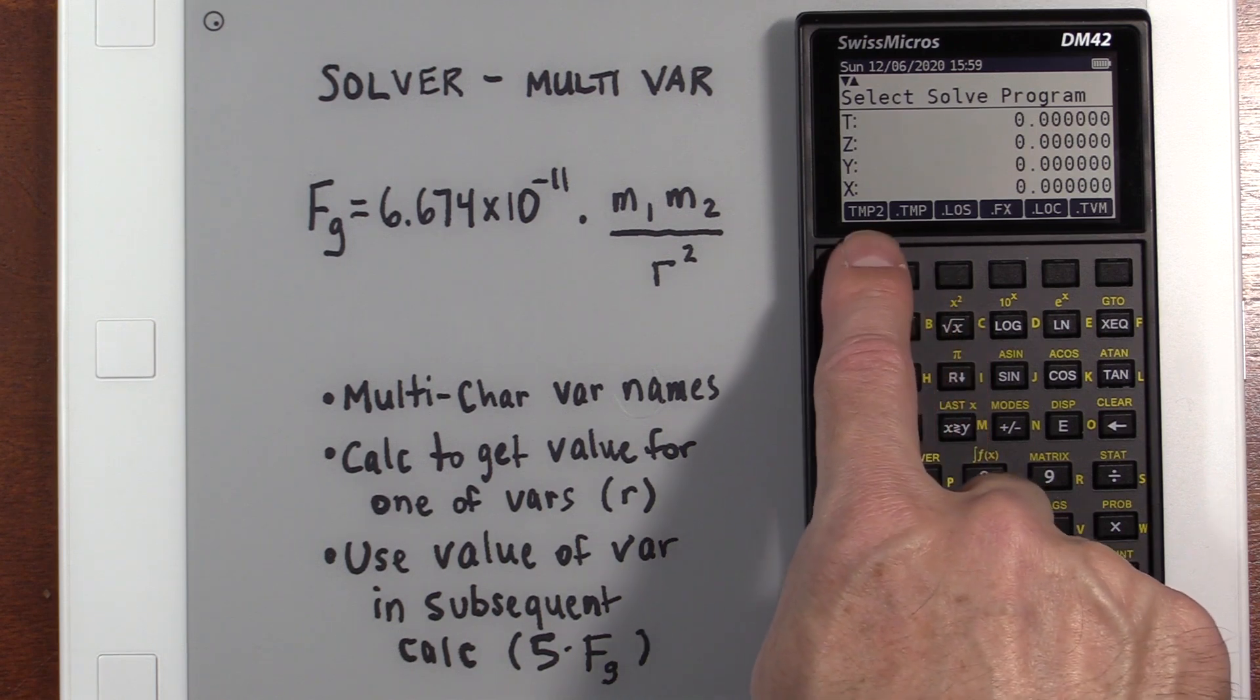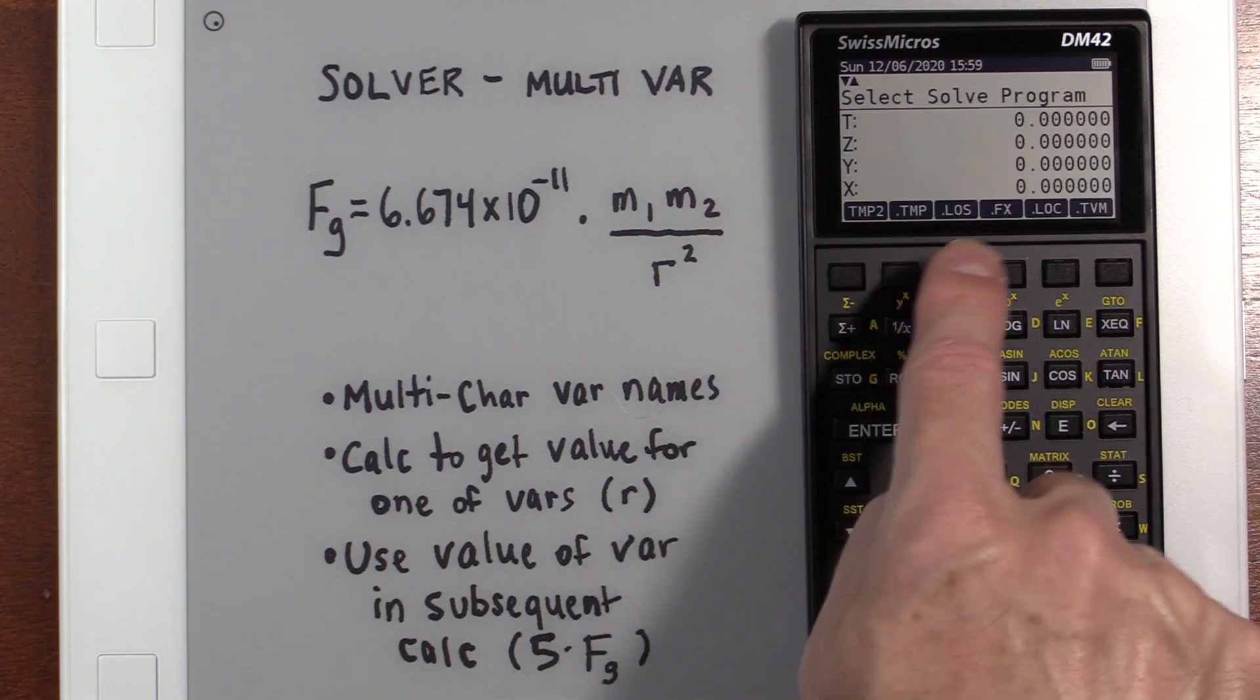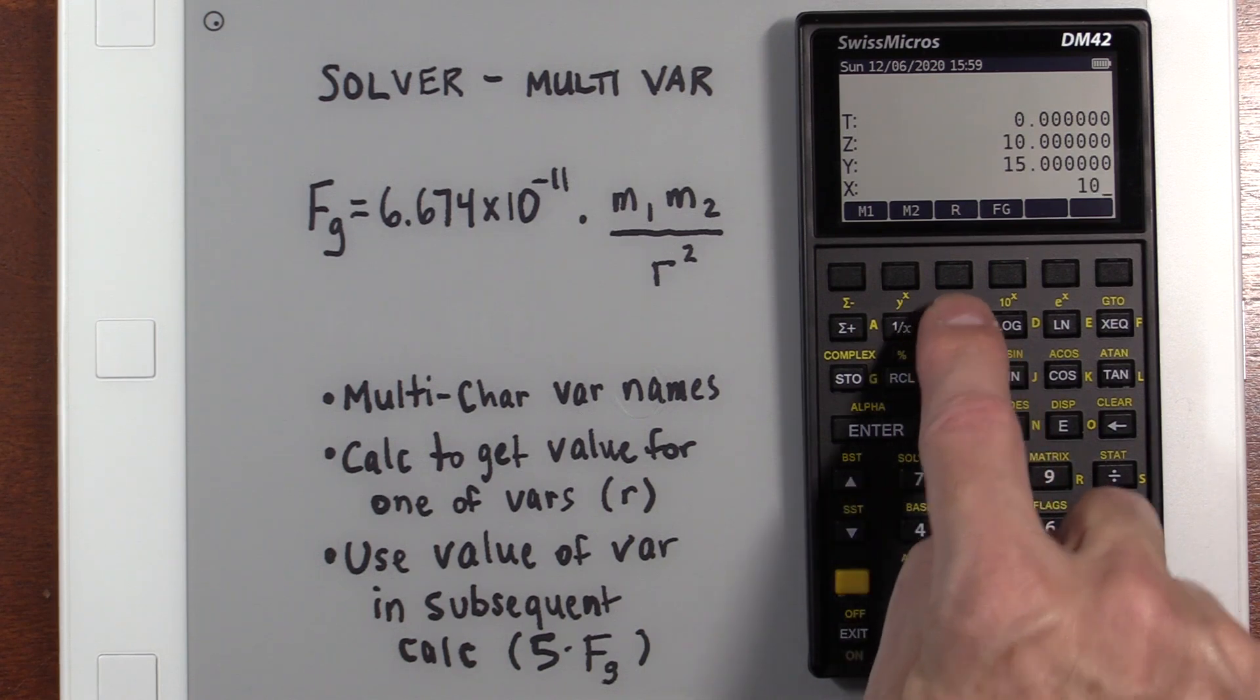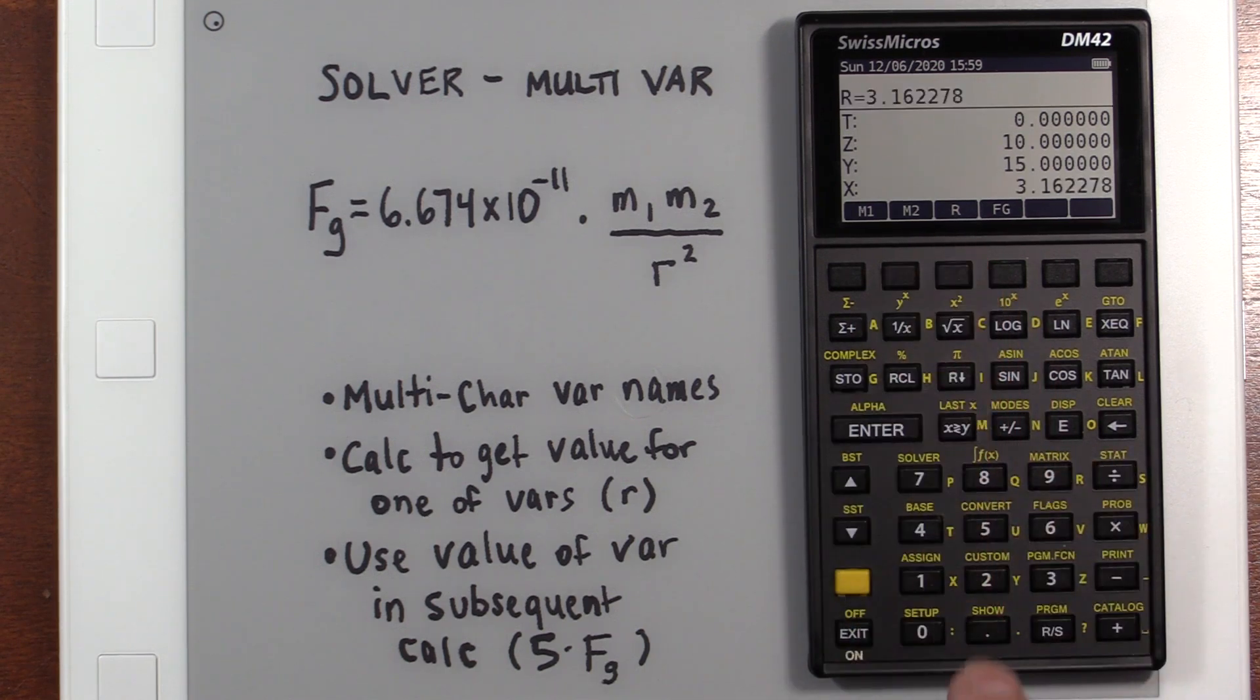We go into our solver. Select the program. Technically, I should have put a period in front of it using my approach. That's how I tell it's a solver program. The calculator itself doesn't care. Let's use 10 for M1. 15 for M2. We'll use the square root of 10 for R. And I'm doing that because I'm being consistent with my other example, with the other calculators. And we want to solve for FG. We could put in a guess if we want. Let's just say 0. I think it already was. And we hit FG again. We get our answer.